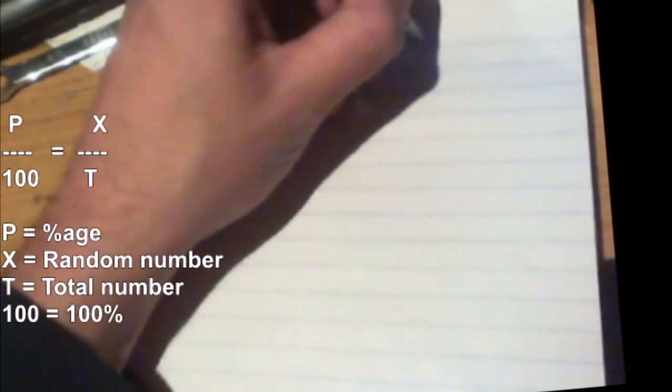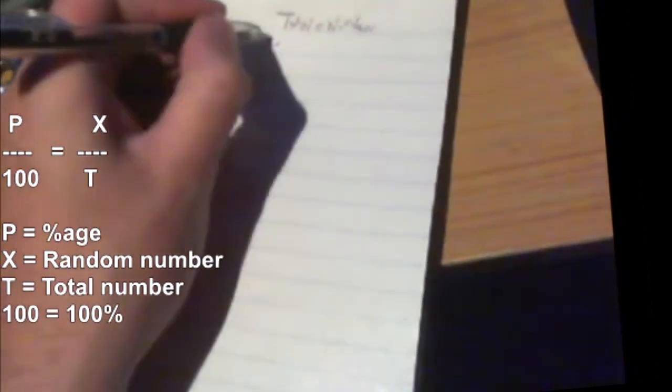So T equals total number, X is a random number, P is the percentage.